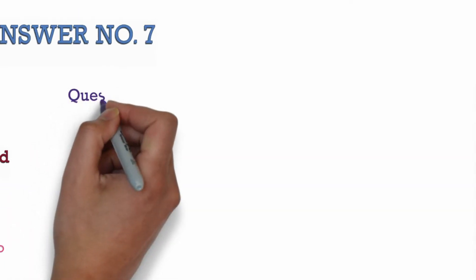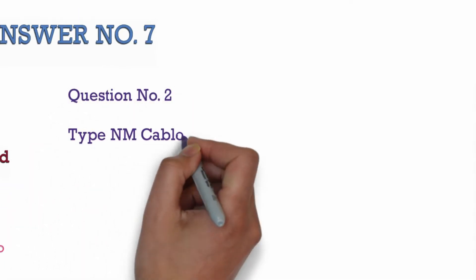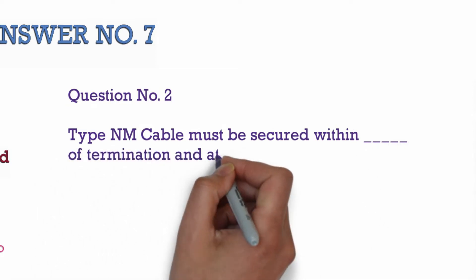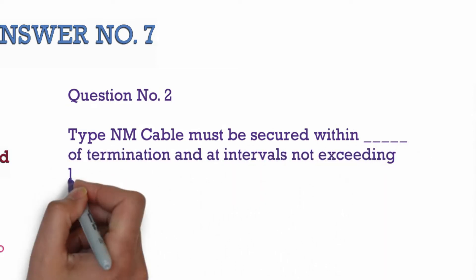Question Number 2: Type NM cable must be secured within blank of termination and at intervals not exceeding 1400 millimeter.